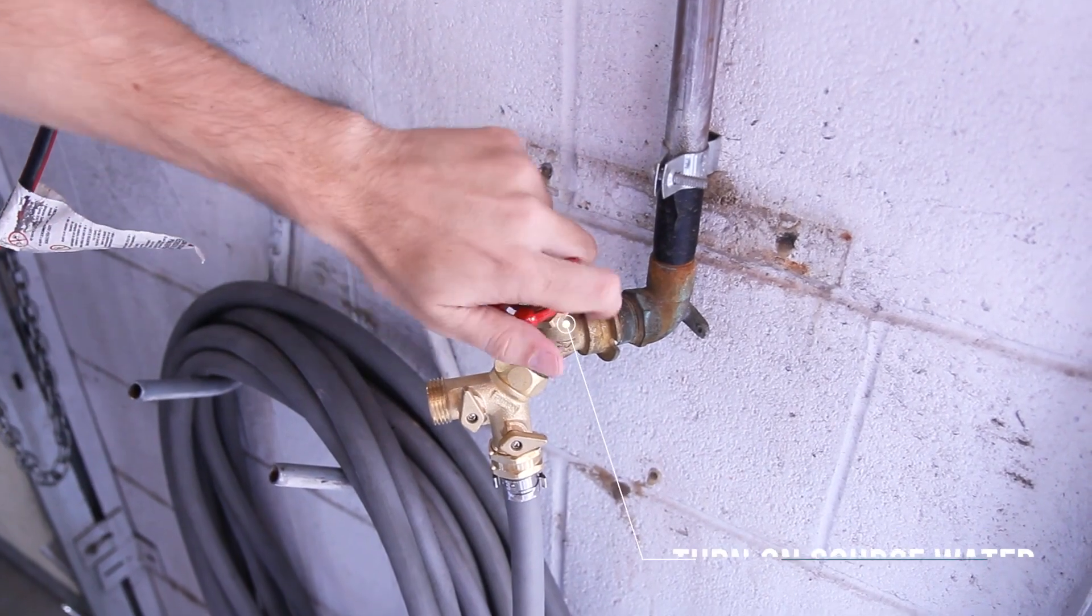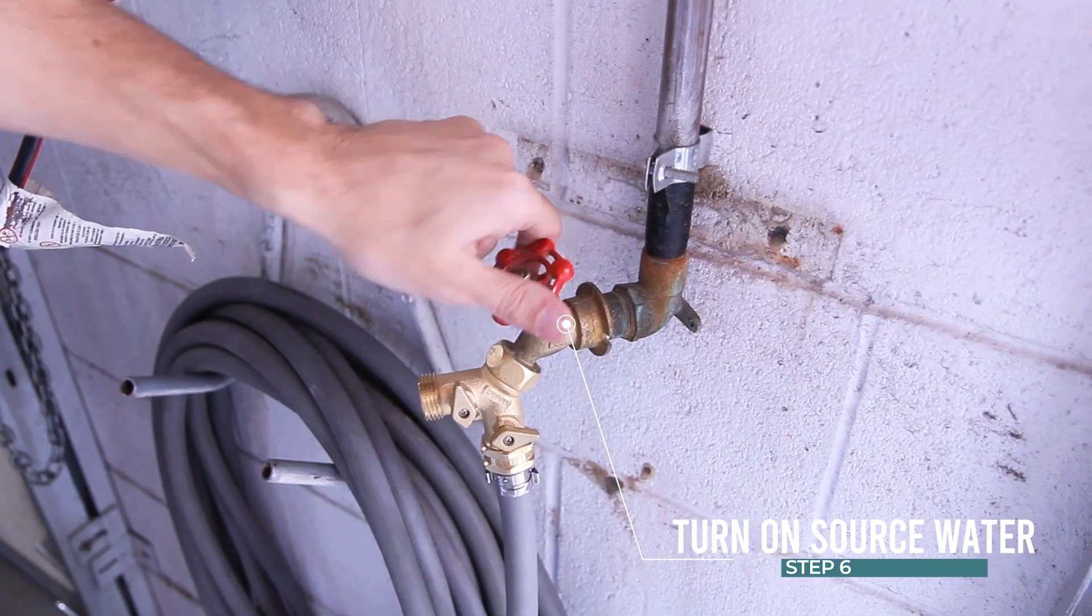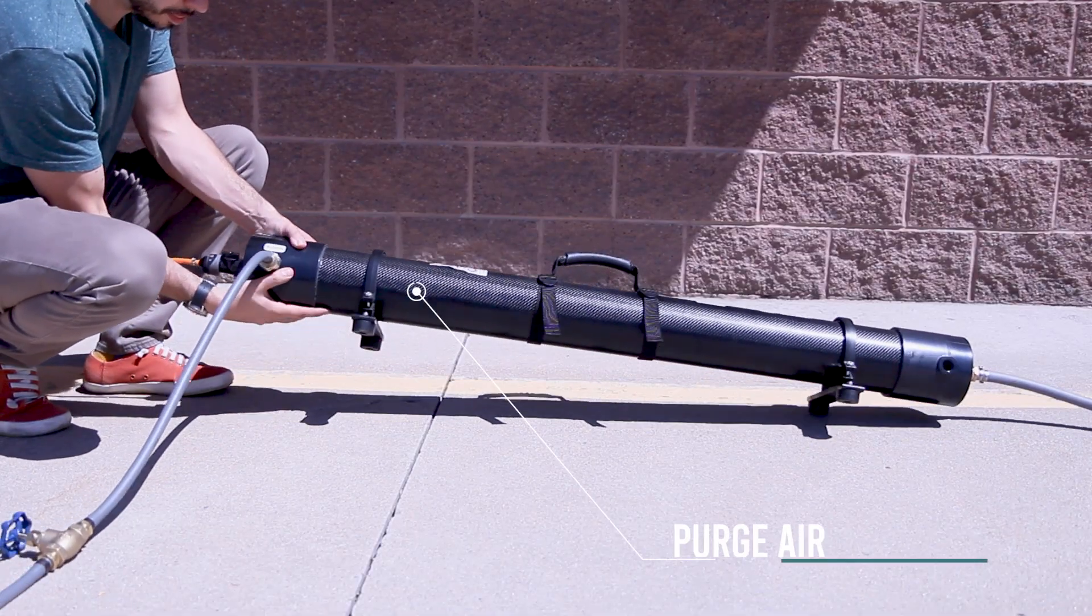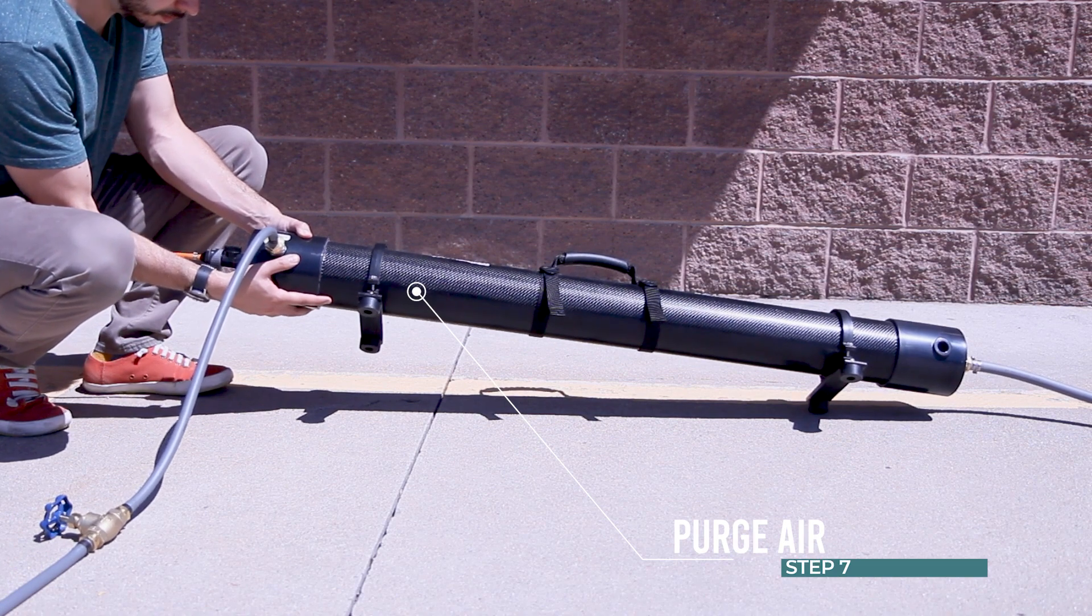Step 6: Turn on water. Step 7: Elevate the outlet side of the unit and rotate so bypass is facing upward until air has been purged from the RO housing through the bypass line.